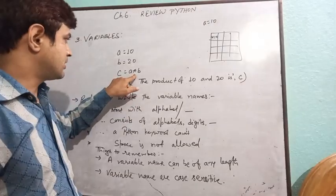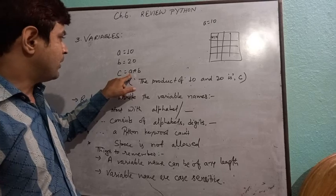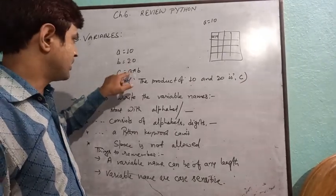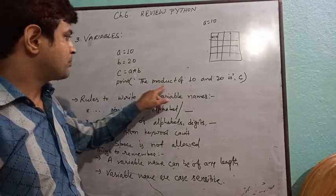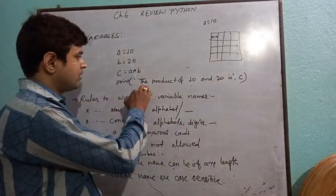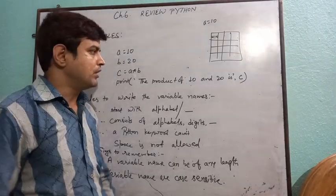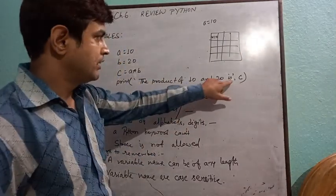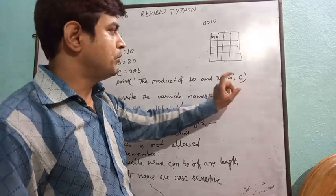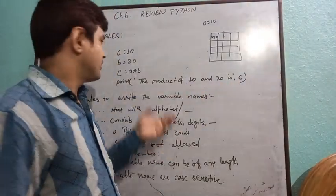Whatever the value of a multiplied by b will be stored in memory location c. And now we can print the value of the product using the print function: print('the product of 10 and 20 is', c). Here it must be noted that the message we want displayed on screen has been enclosed by single inverted commas. After the string, there is a comma, and then the variable whose value we want displayed. As we run, the value will be displayed.